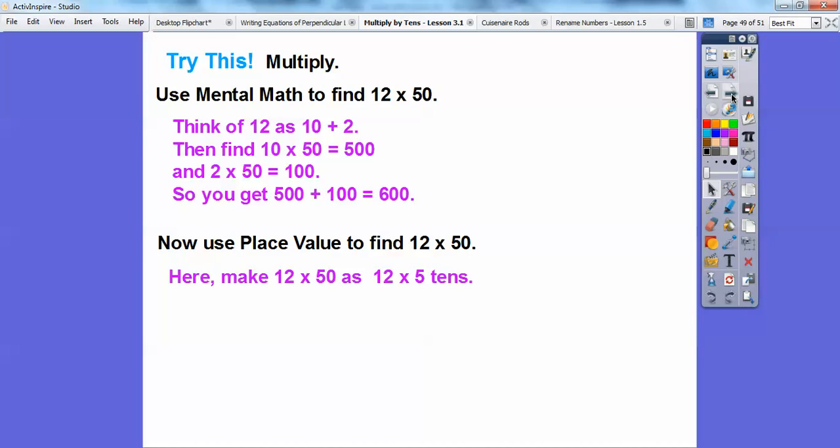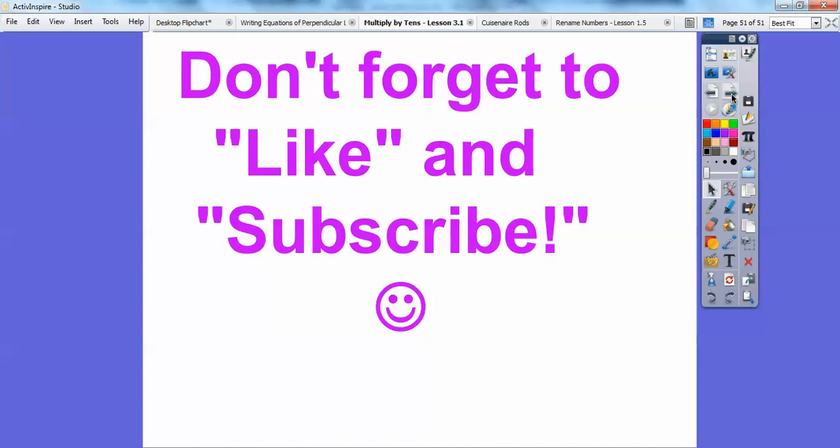And then here, we can make 12 times 50 is 12 times 5 tens. And 12 times 5 is 60. So we get 60 tens or 600. Multiply by tens is great. That's one of my favorite things when I'm doing multiplication. All right, take care.